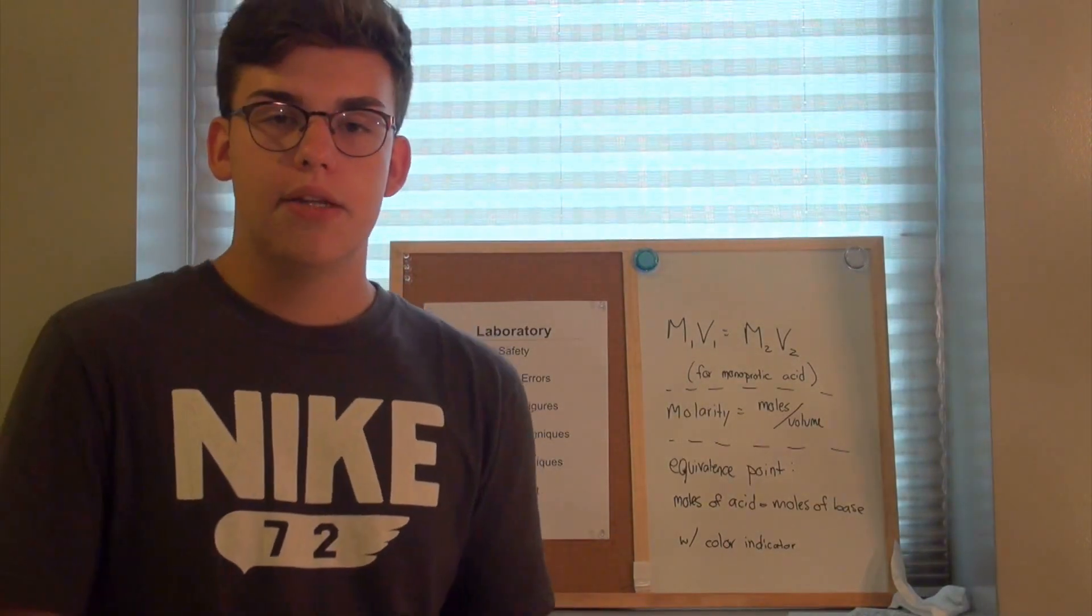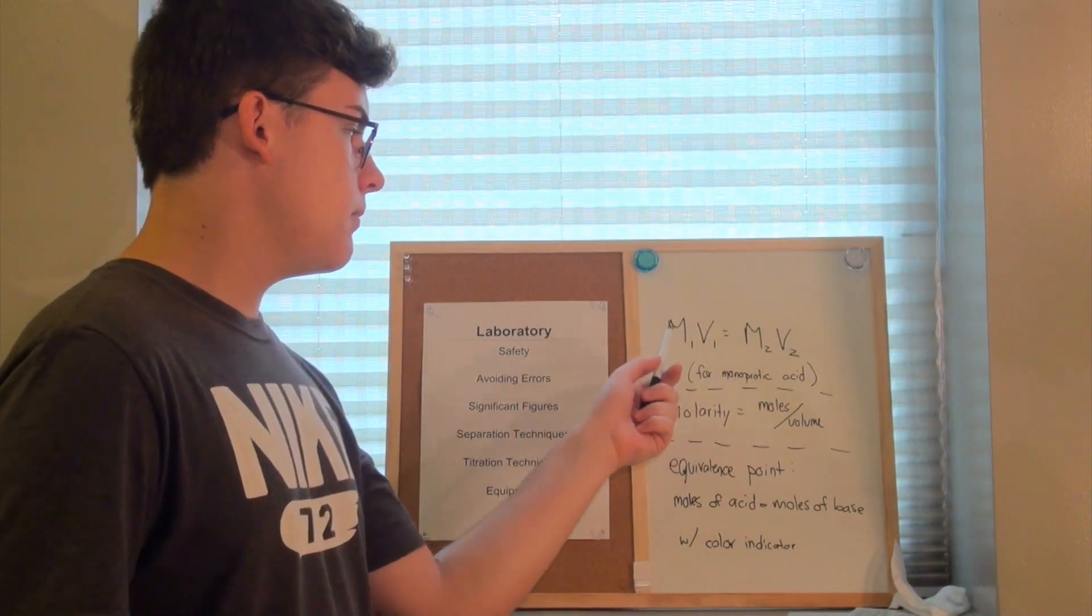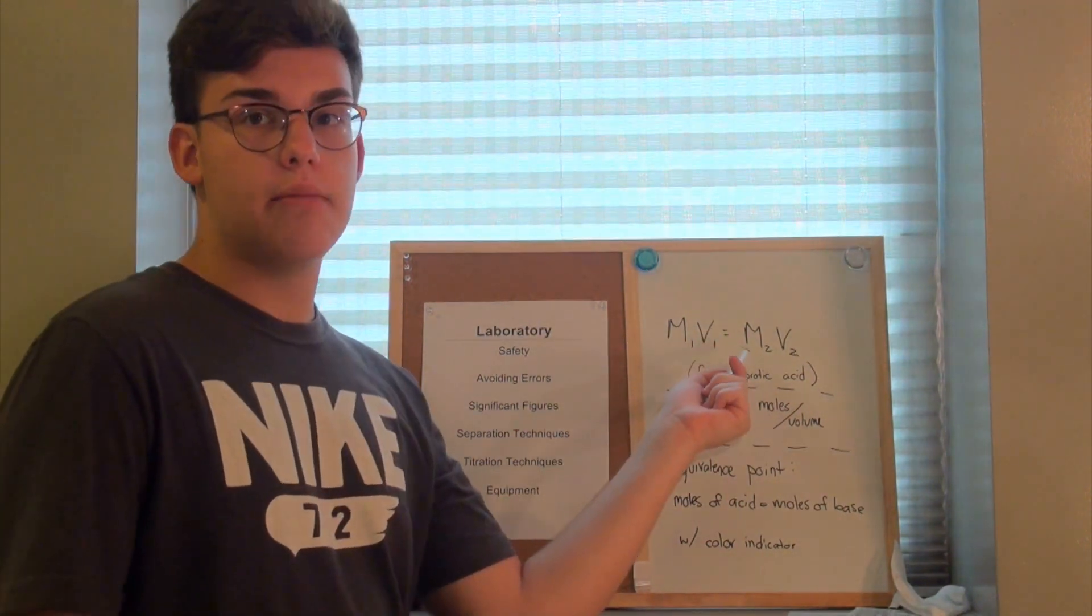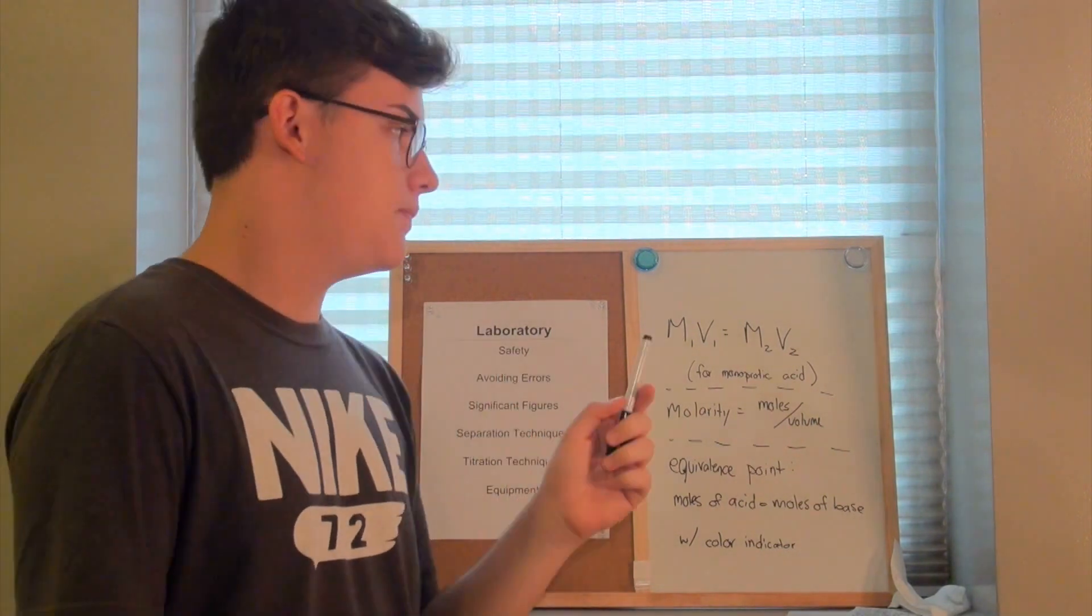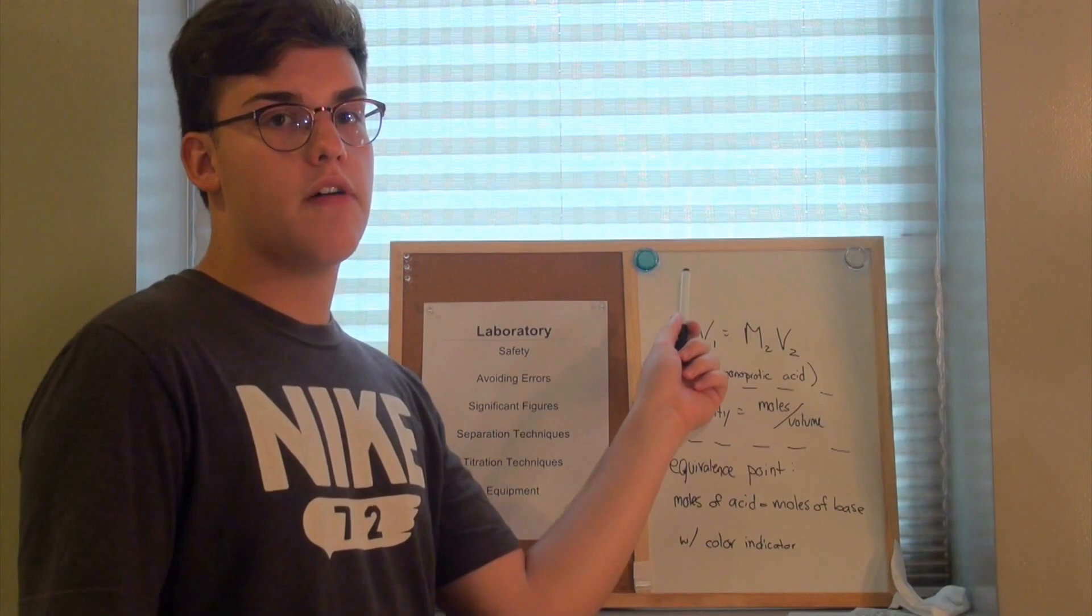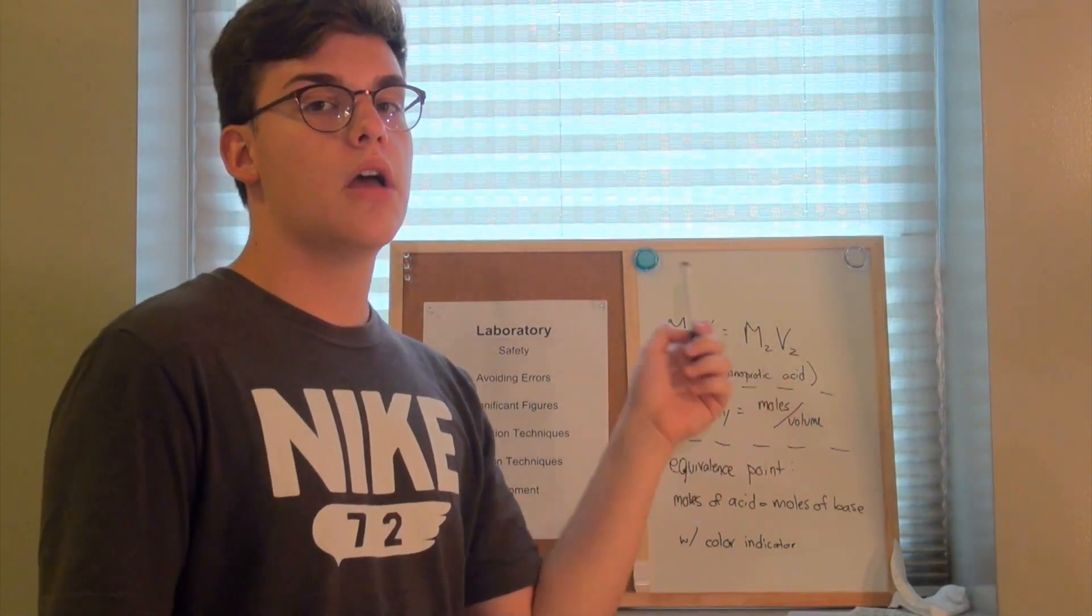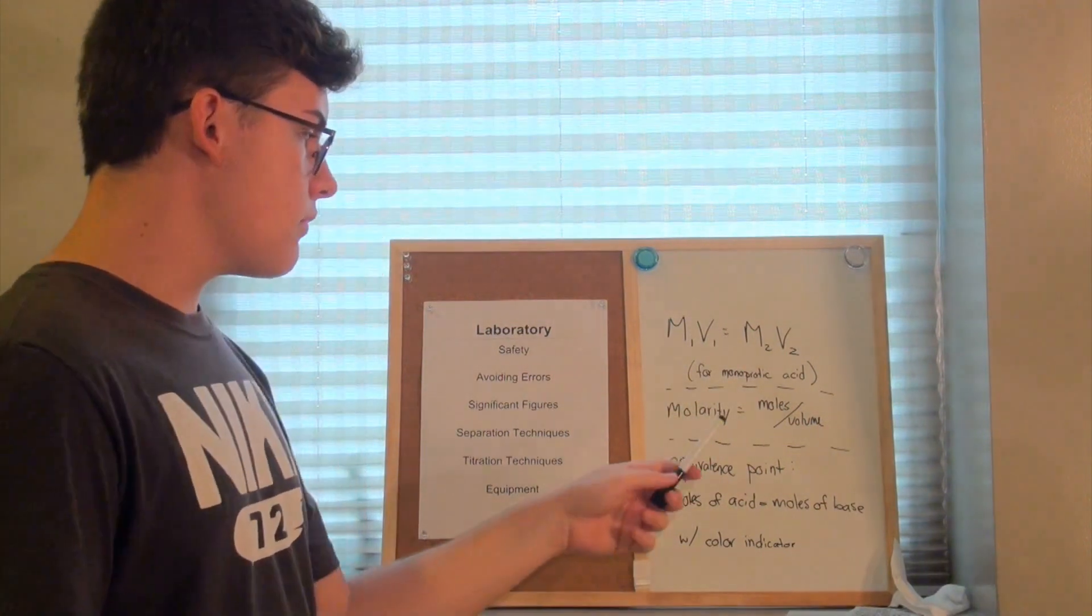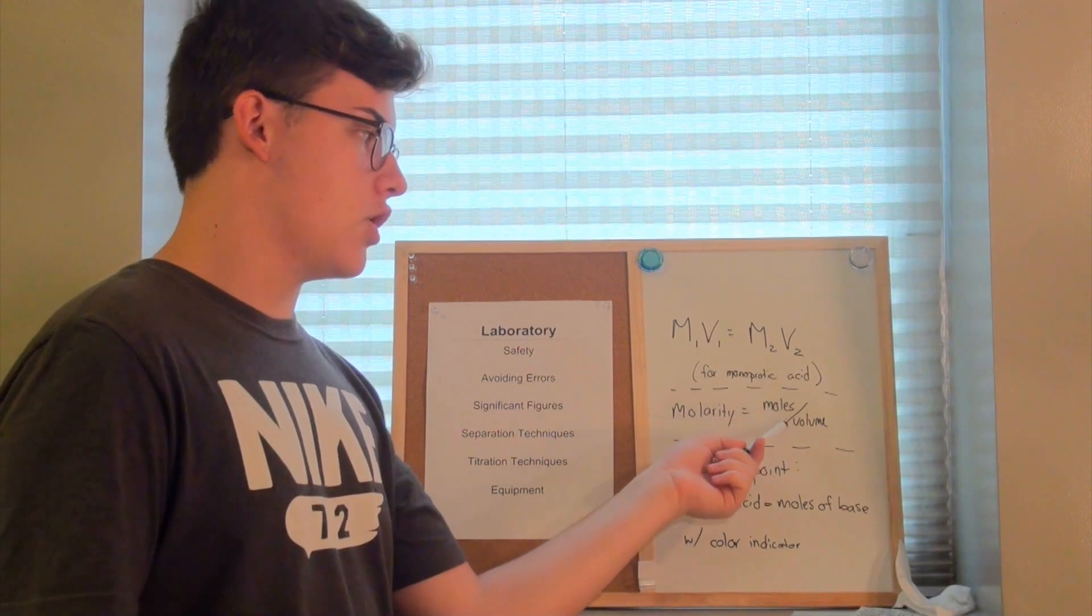When it comes to titration, there is one very important equation you need to know: M1V1 equals M2V2, and this is applicable for monoprotic acids. This basically says that the molarity times the volume of one titrant is equal to the molarity and volume of a second titrant. Molarity is calculated by the division of the moles of the substance divided by volume.